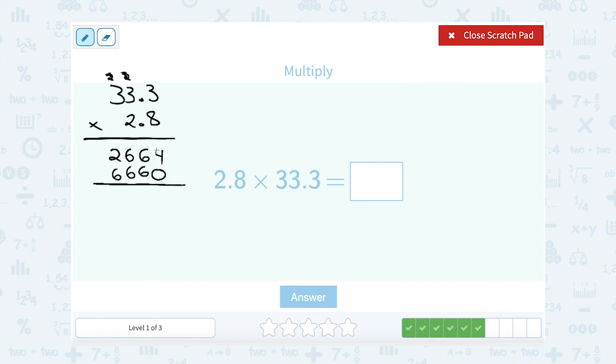And then remember, when you have those two columns, I've got to add them together. So 4 plus 0 is 4. 6 plus 6 is 12, so 2, carry the 1. 6 and 6 is 12, plus the 1 is 13, so 3, carry the 1. And 2 and 6 is 8, plus that extra 1 is 9.